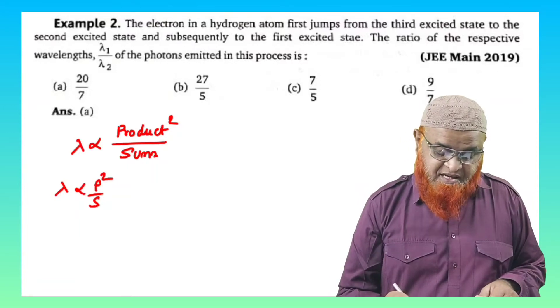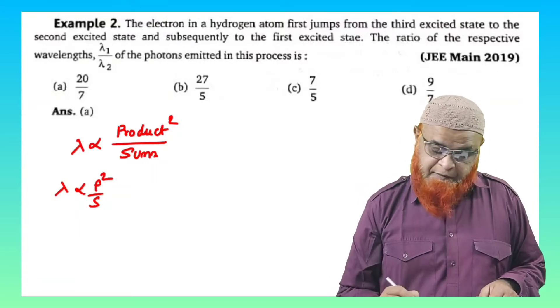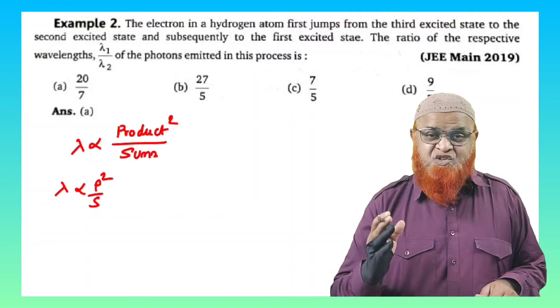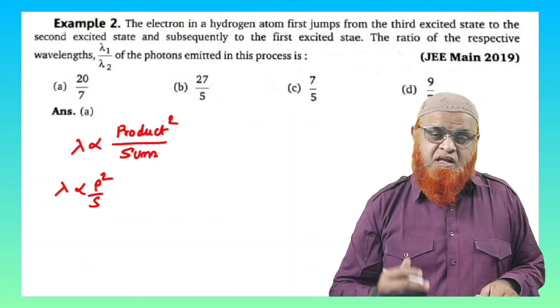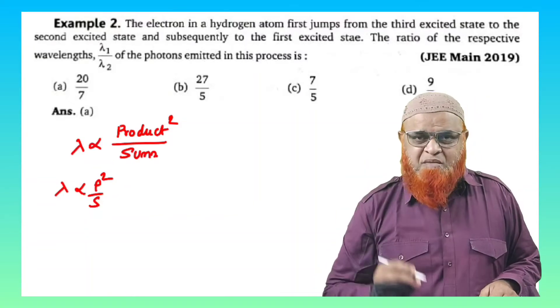So just see here now. He's asking us to find out the wavelength ratios when there is a transition from one energy level to another energy level. What is the shortcut formula here?